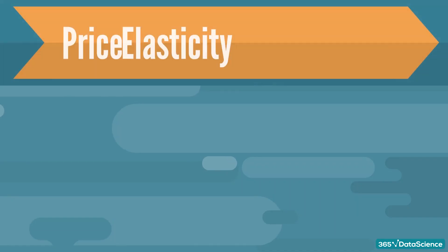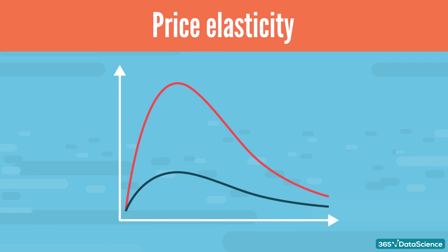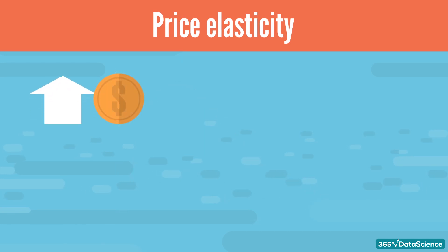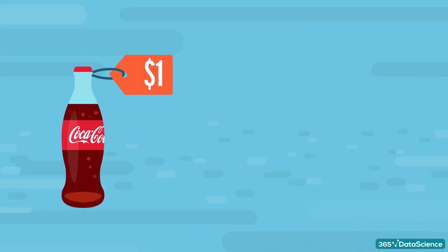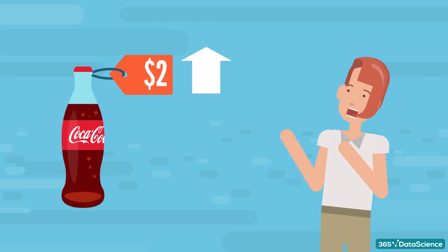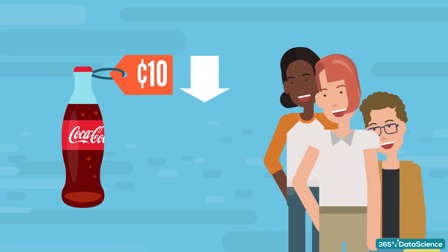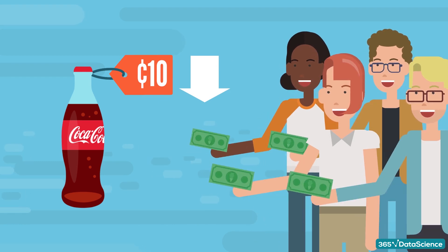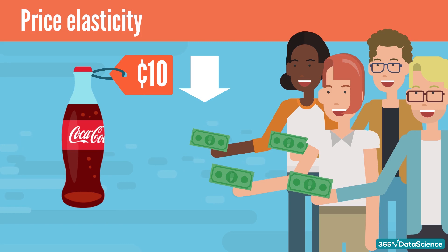Now let's get into customer analytics, and more specifically, price elasticity. In the broadest terms possible, price elasticity measures how purchasing behavior changes when the price changes. For instance, let's assume a bottle of Coca-Cola costs $1. If the price increases to $2, many people would stop buying cola as it would be too expensive. On the other hand, if the price decreases to $0.10, many more people are going to start purchasing Coca-Cola. The measure we use to quantify this phenomenon is called price elasticity of Coca-Cola demand, or price elasticity in short.